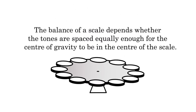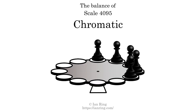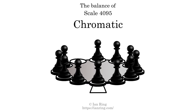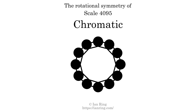The balance of a scale depends on whether the tones are spaced equally enough for the center of gravity to be in the center of the scale. This scale is balanced. The inverse of a scale is a mirror image — it is what you get when the sequence of intervals is reversed. This scale is symmetrical; its inverse is the same as itself. Like all symmetrical scales, this scale is achiral, since it can transform into its own reflection by a rotational transformation. This scale has rotational symmetry at one semitone.